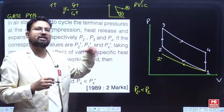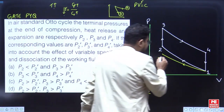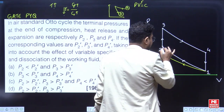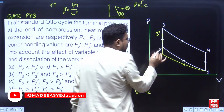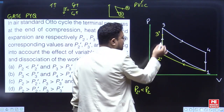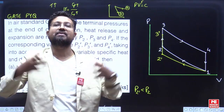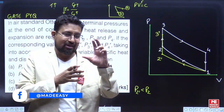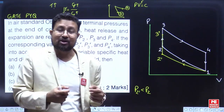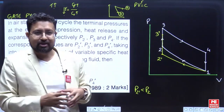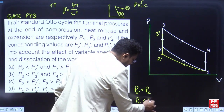For the heat addition process, we start from 2' which is below 2. Adding the same amount of heat, we reach 3' which is below 3. This is because we started lower, and also because the higher specific heat at elevated temperatures means the same heat addition produces a smaller temperature rise. Therefore p3' is less than p3.